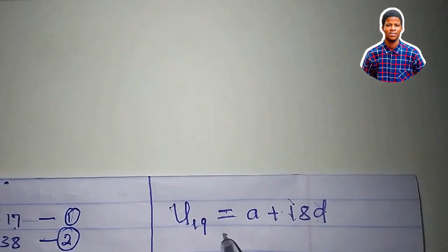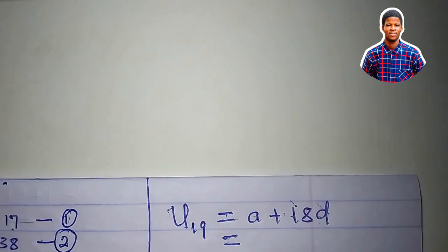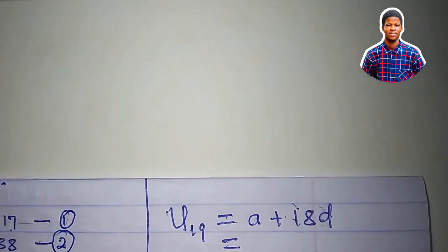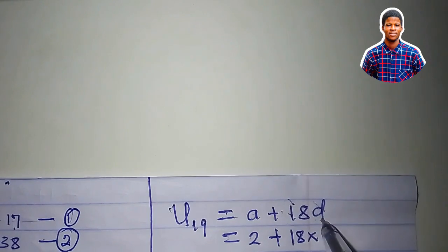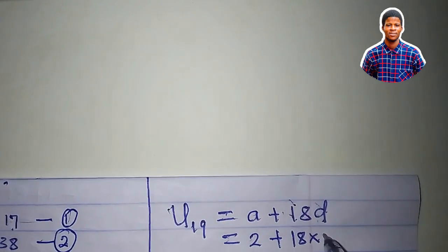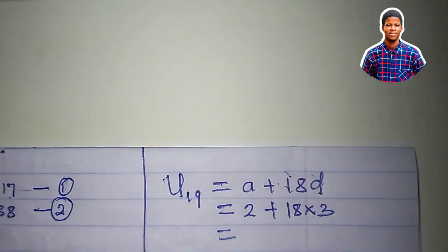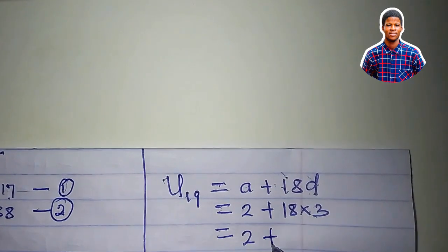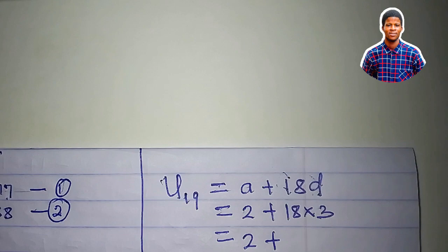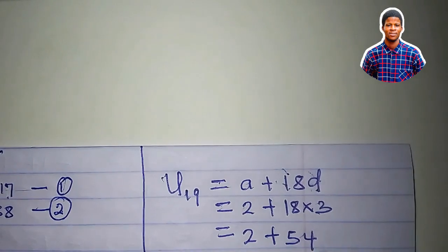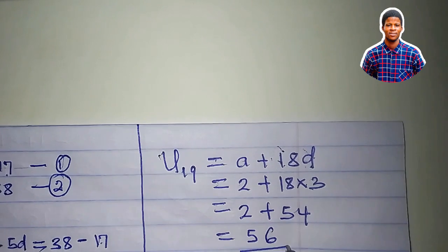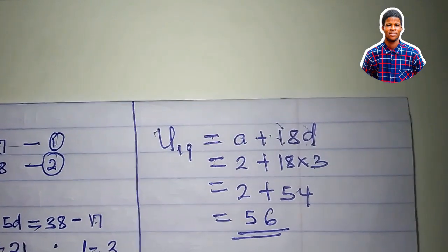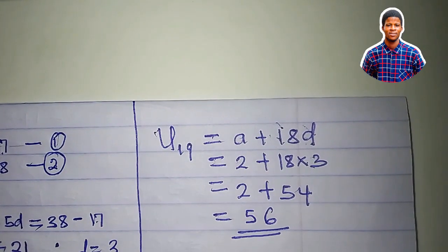So what is our A that we just calculated for? A is 2. What's our d? d is 3, which is the common difference. So we can just go ahead and say, 2 plus, what's 18 times 3? 54. 2 plus 54 is 56. So the 19th term of that progression is 56.